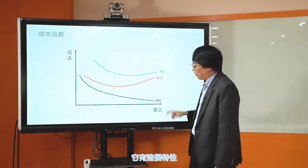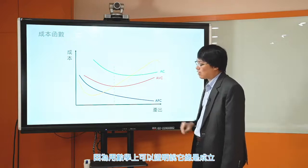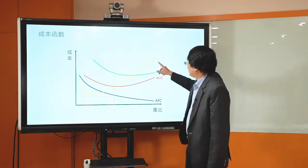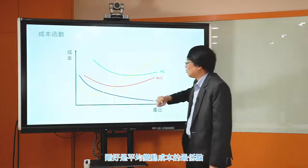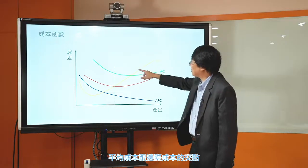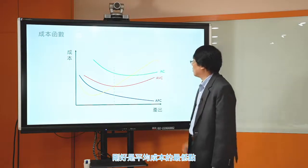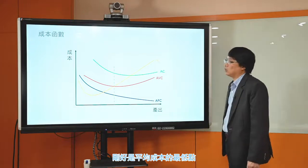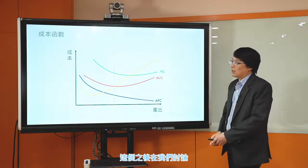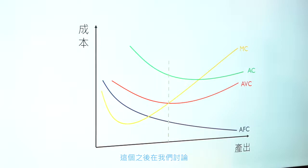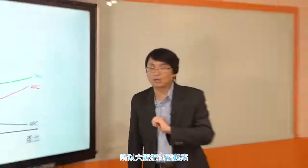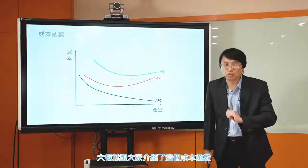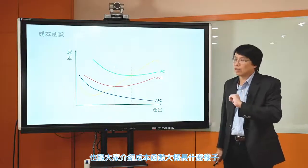把边际成本线跟AFC、AVC、AC这几条线叠起来，有几个特性要跟大家说明：边际成本跟平均变动成本的交点，刚好是平均变动成本的最低点；边际成本跟平均成本的交点，刚好也是平均成本的最低点。这个是数学上可以证明的，在比较初阶的课程不会讲这个证明，但大家可以把这个事情记起来。这对之后讨论厂商的供给决策会有一些作用。